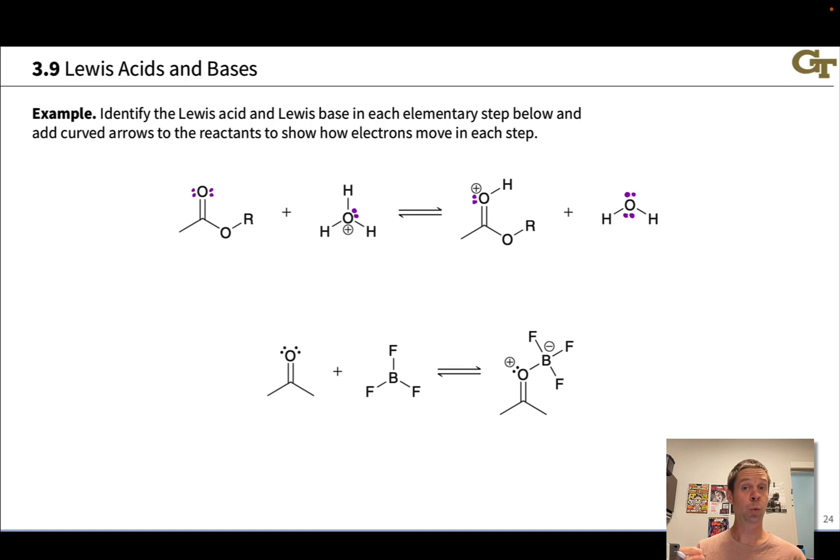Let's also now notice what bonds are made and broken, and where lone pairs become bonds, and bonds become lone pairs. It's apparent that this lone pair, highlighted in purple, becomes a pair of bonding electrons, and this bonding pair of electrons in H3O+, becomes a lone pair. And so the apparent electron flow here involves donation of the pair from this oxygen to the hydrogen and cleavage of the OH bond toward oxygen.